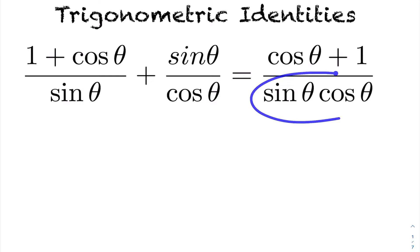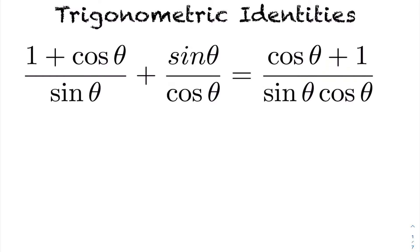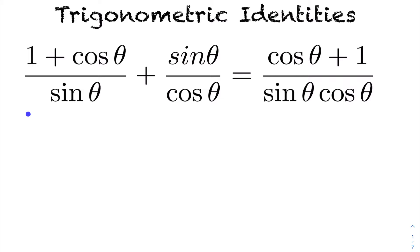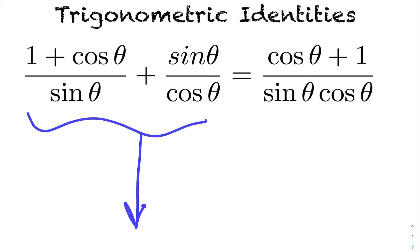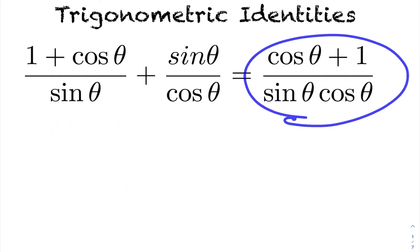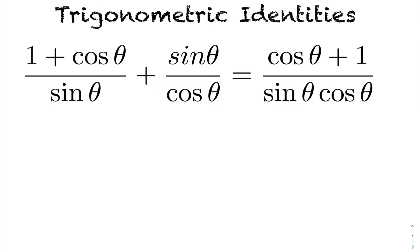What you cannot do with trig identities is multiply across — for instance by sine theta cos theta — to try to get rid of denominators or manipulate the entire equation. When solving these identities, you just have to pick one side of the equation and work solely with that side to get the other side.